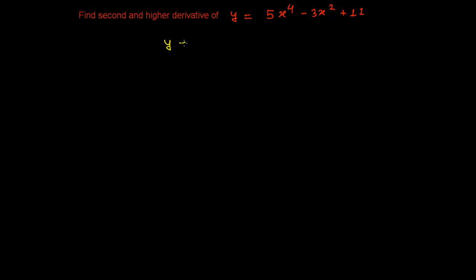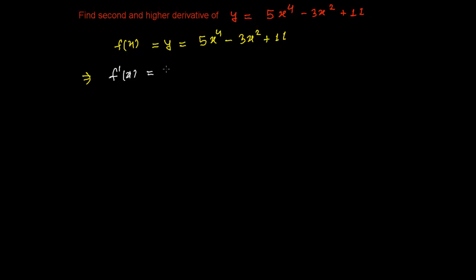Here I have a function: y equals 5x to the power 4 minus 3x squared plus 11. If you have the habit of writing like f of x, then please write it that way — whatever feels easy. Both notations, y equals and f of x, are fine. We also write the first derivative as f prime of x, or as dy over dx — both are actually the same notations.